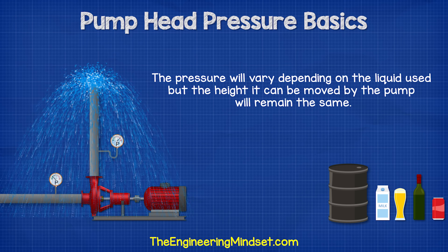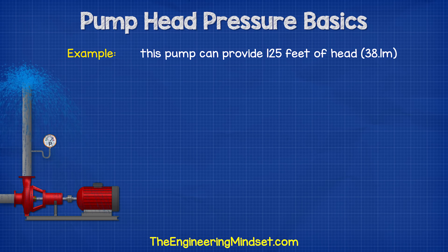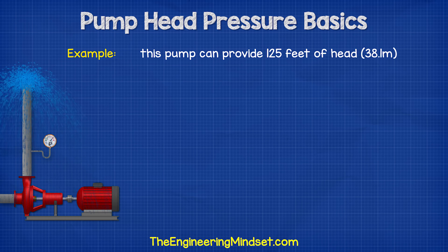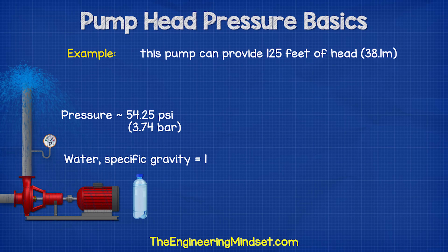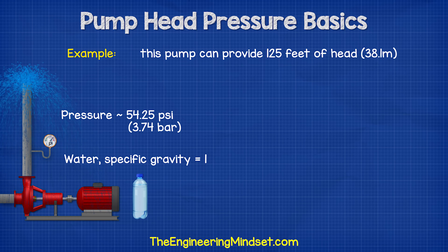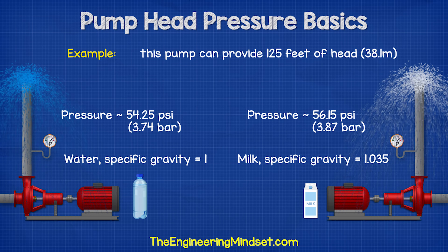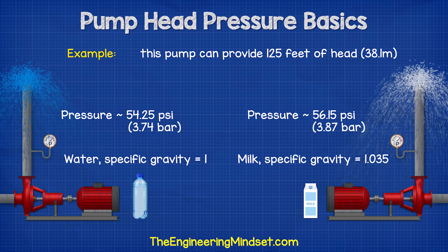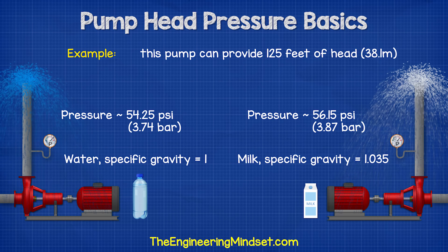However, the height the liquid can be moved by the pump will remain the same. For example, we have a pump which can provide 125 feet of head. If we use it to pump water, the pressure will be around 54.25 psi. But if we were to use it to pump milk, then the pressure will be around 56.15 psi, and that's purely because of the properties of the two fluids.